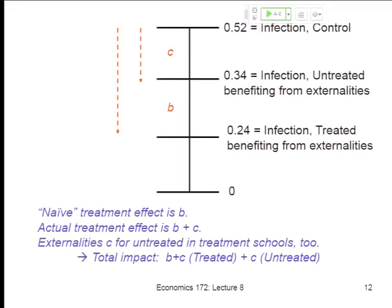If we think about the total impact of deworming, it's any benefits for the treated — B plus C — plus any benefits for the untreated. If we know the proportions in these different groups, we could add them up and get the total gain. We said all this last time, but just wanted to get everyone back on the same page.